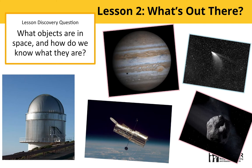Lesson 2: What's out there? Students classify unknown space objects according to their characteristics, such as shape and brightness. They use this skill to narrow down the identity of the mystery object as either an asteroid or a comet.